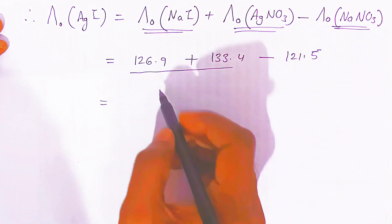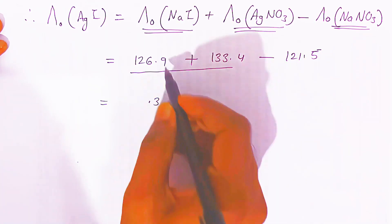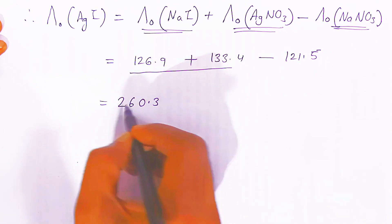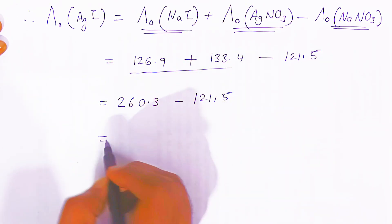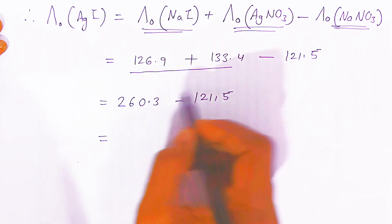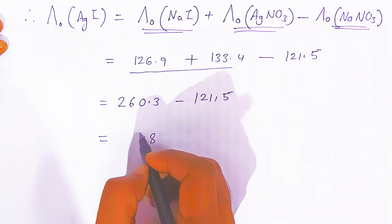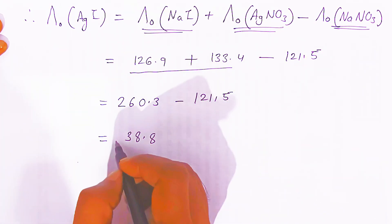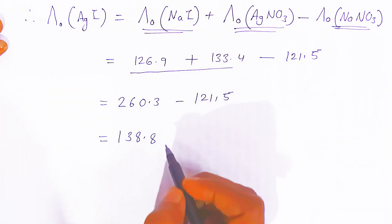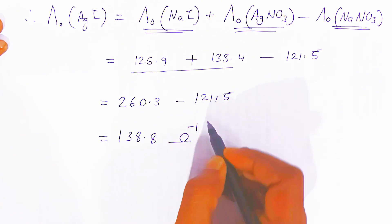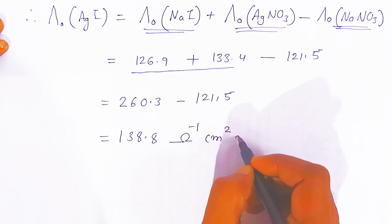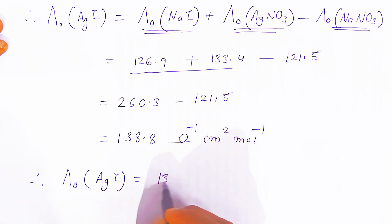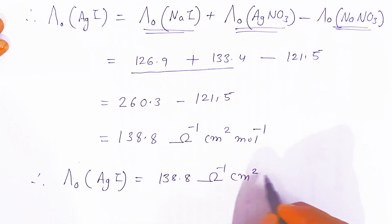Adding 126.9 and 133.4: 9 plus 4 is 13, carry 1; 6 plus 3 plus 1 is 10, carry 1; 2 plus 3 plus 1 is 6 — giving 260.3. Then 260.3 minus 121.5: 3 minus 5 not possible, borrow to get 13 minus 5 is 8; 9 minus 1 is 8; 5 minus 2 is 3; 2 minus 1 is 1 — giving 138.8. So the molar conductivity of silver iodide is 138.8 ohm inverse centimeter square per mole.